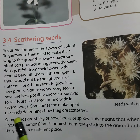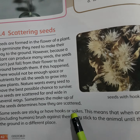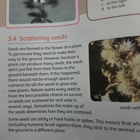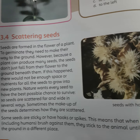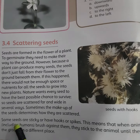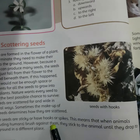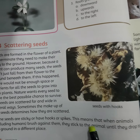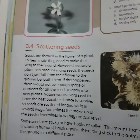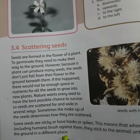Some seeds are sticky or have hooks or spikes. This means that when animals, including humans, brush against them, they stick to the animals until they drop to the ground in a different place.